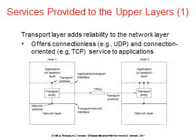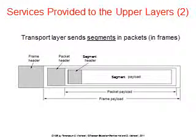There are two types of network service: connection-oriented and connectionless, and correspondingly two types of transport service. The connection-oriented transport service is similar to connection-oriented network service in many ways. The different segments are sent over in packets or frames through the transport layer, as shown in figure 6-3 on page 499, which illustrates the header, packet header, frame header, and segment header all together.